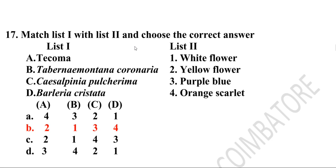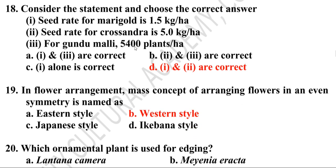Eighteenth question: Select the correct statement. Seed rate for marigold is 1.5 kg per hectare; seed rate for crossandra is 5 kg per hectare; for gundumali, 5400 plants per hectare. Option D is correct. Seed rate for marigold is 1.5 kg per hectare and seed rate for crossandra is 5.5 kg per hectare.